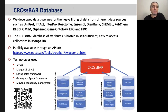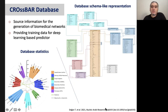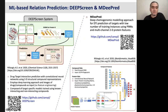The first part was the construction of the database. We developed data pipelines to automatically get data from many resources, such as UniProt, IntAct, InterPro, Gene Ontology, Orphanet, EFO, HPO, DrugBank, ChEMBL, and many more. The CrossBar database of attributes is hosted in MongoDB and is publicly available through the API. CrossBarDB is a large-scale database as it integrates data from numerous well-known biological and biomedical databases. The data in CrossBarDB is used for two main purposes: first, it constitutes source data for the construction of biomedical networks or knowledge graphs; and second, it provides training data for our computational predictors.